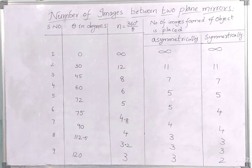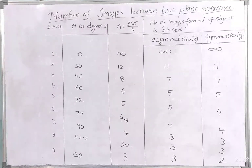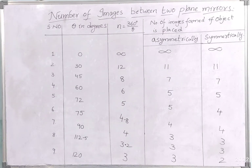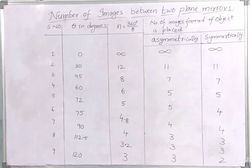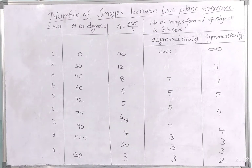Coming to the fourth situation, the angle between the two plane mirrors is 60 degrees. So n = 360/60, which gives 6. Since 6 is even, we do 360/theta minus 1, giving 5 images when the object is placed asymmetrically and 5 images when placed symmetrically.